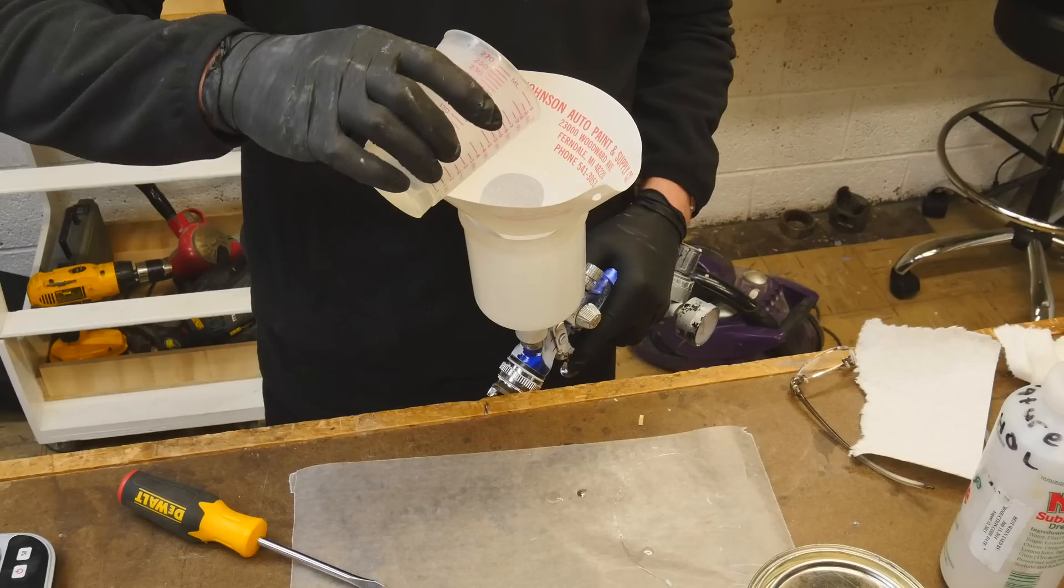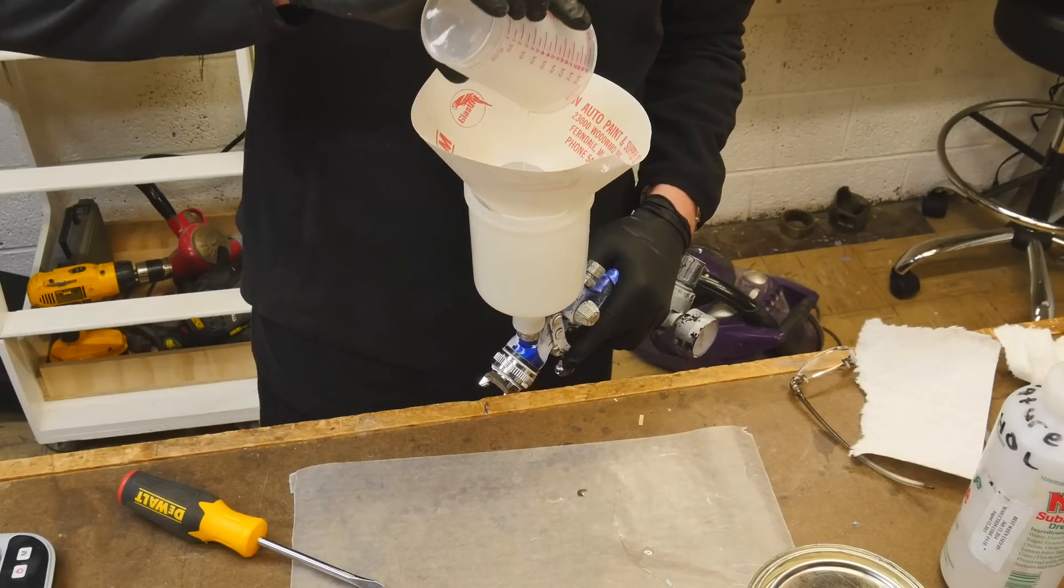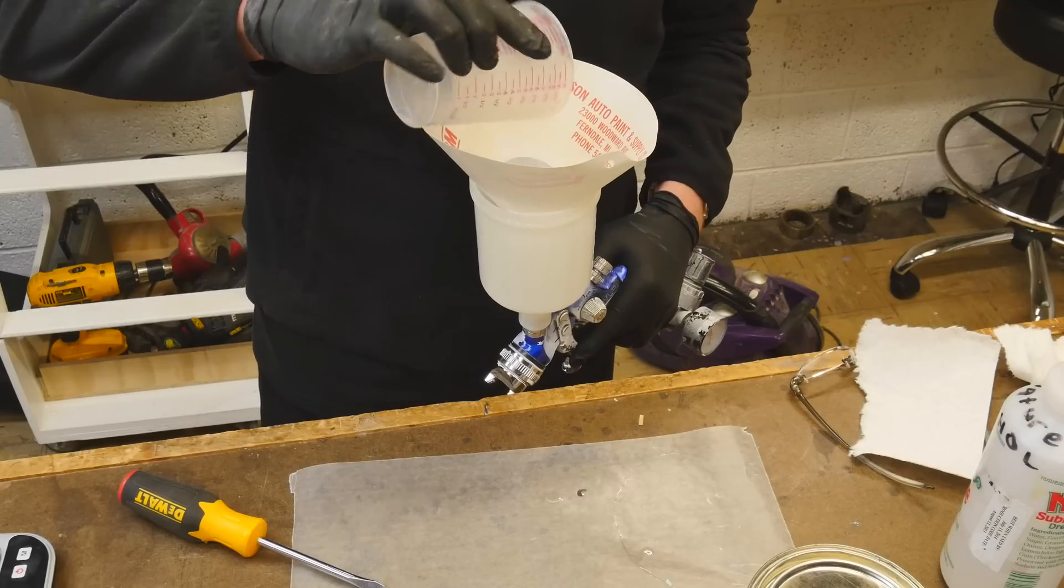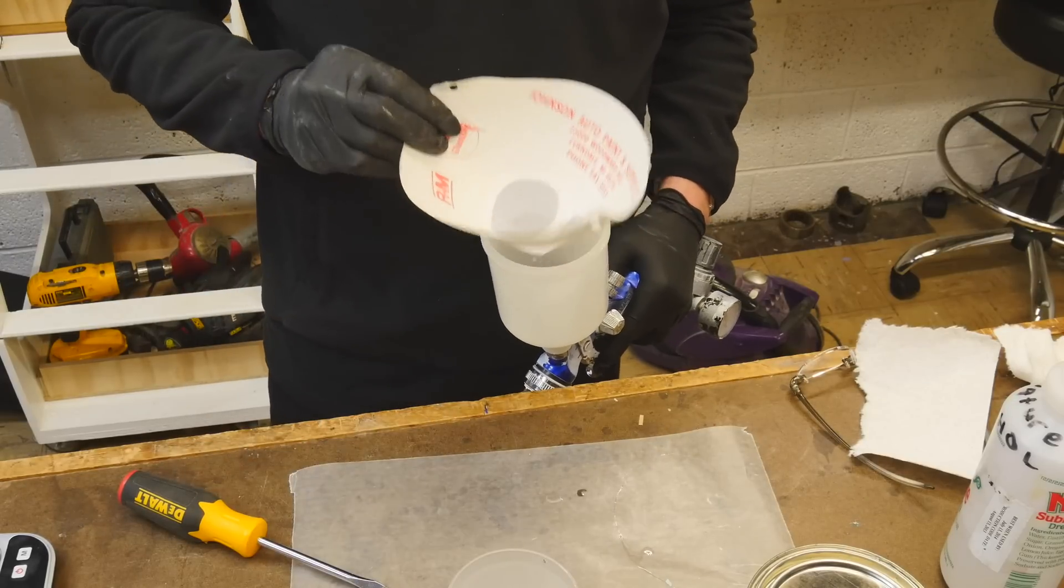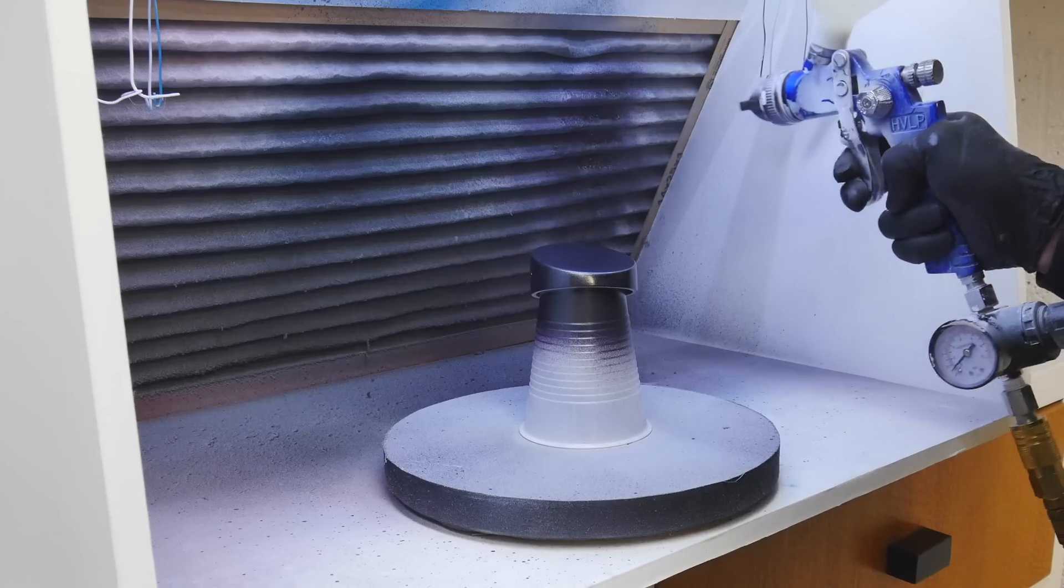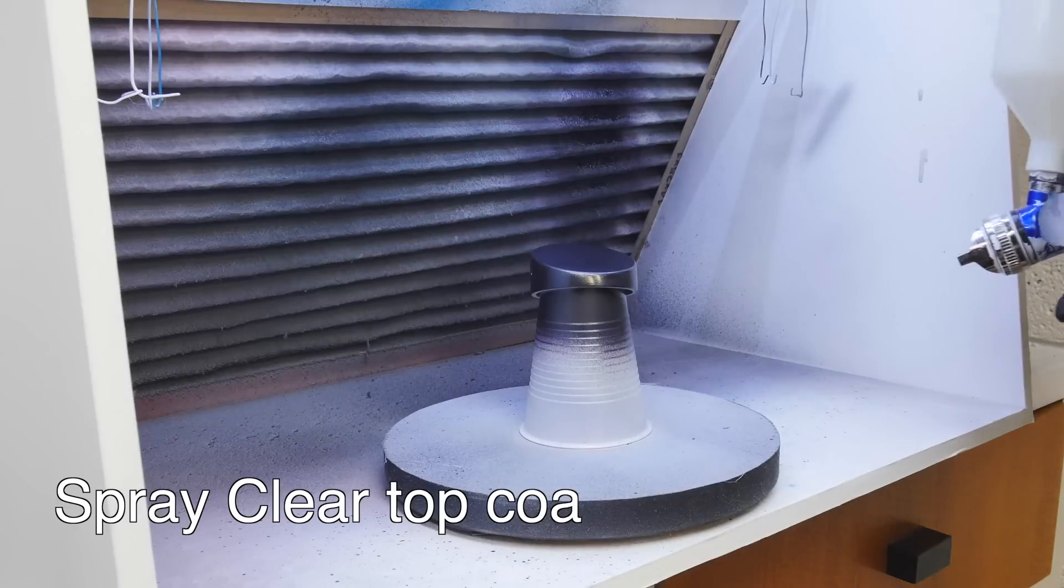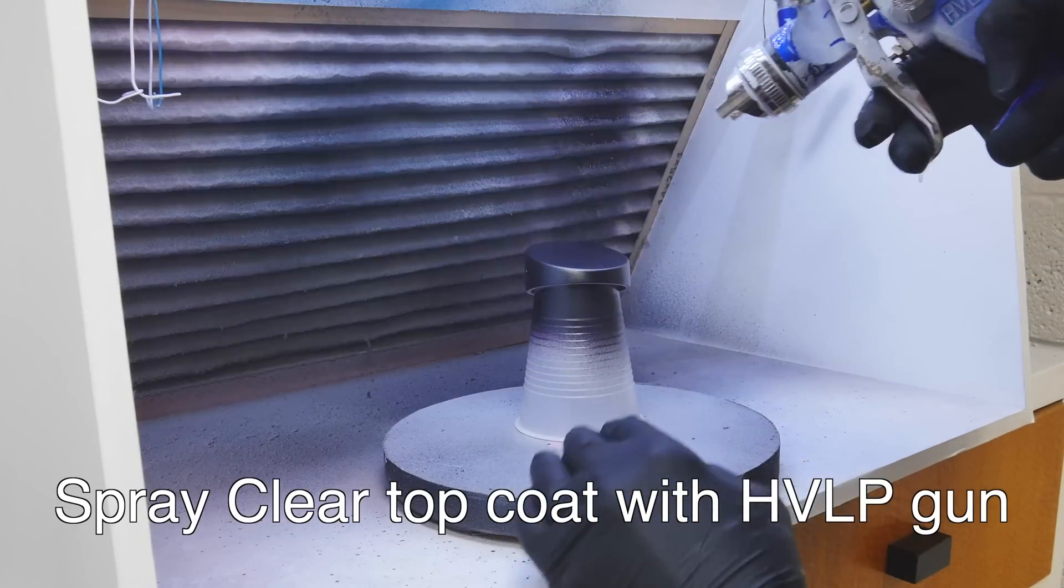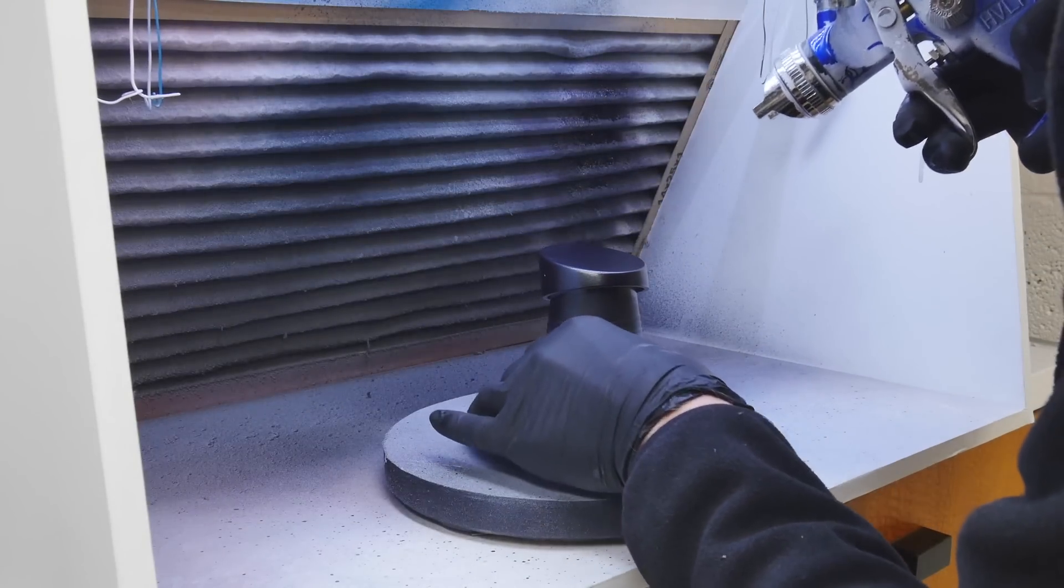Very much like a urethane plastic that you see me use all the time. But this is specially made for automotive. And this is what's going to give you that beautiful gloss finish. I'm putting the stuff into an HVLP gun, testing out the spray, and I'm going to lay down my clear coat on my part.